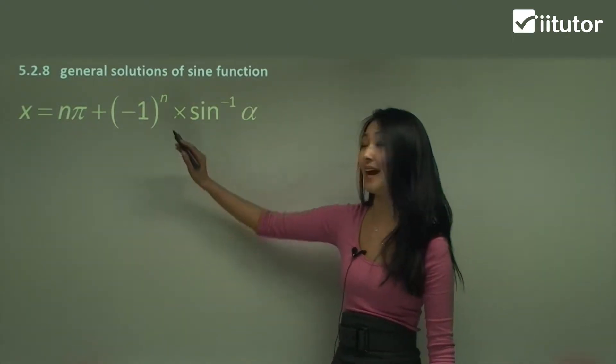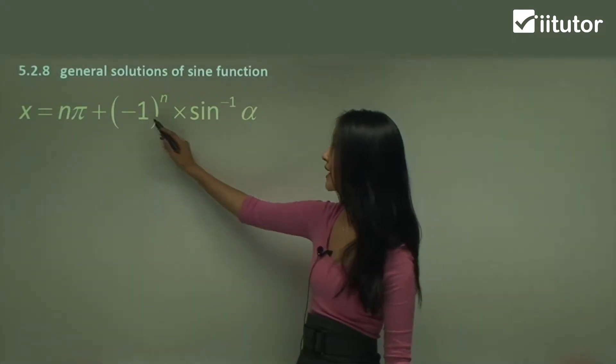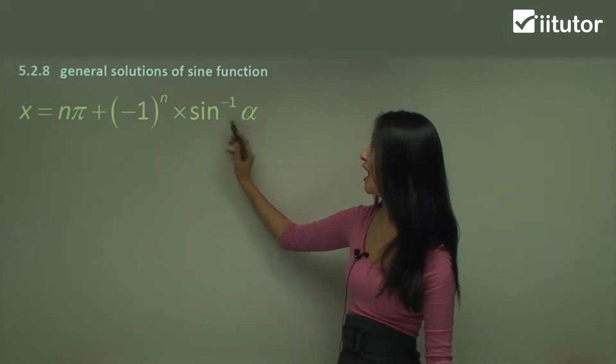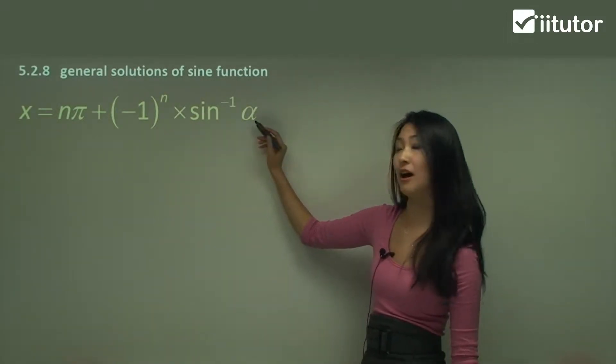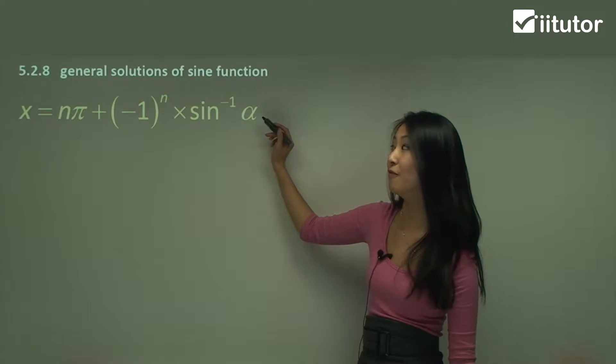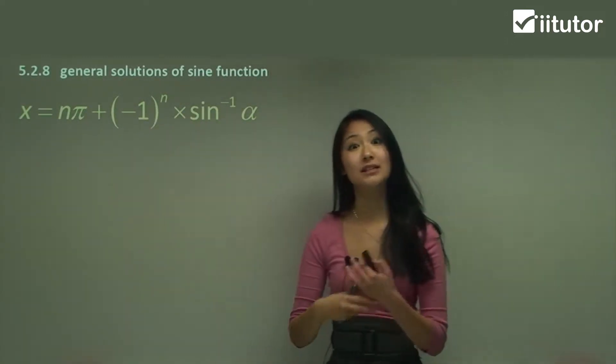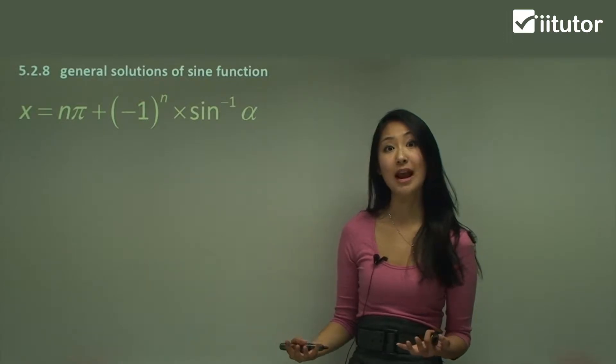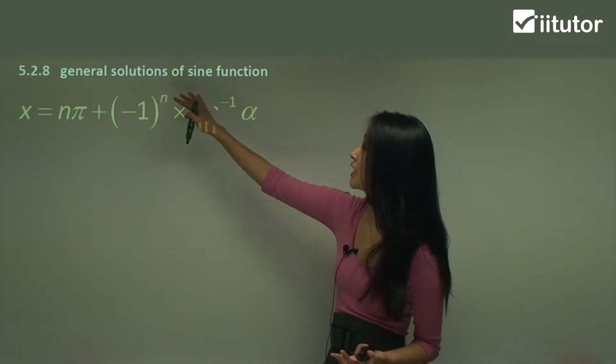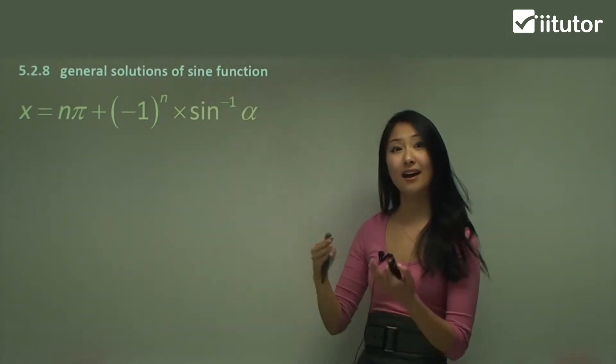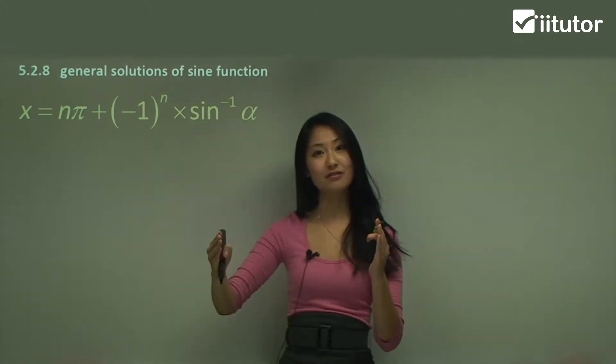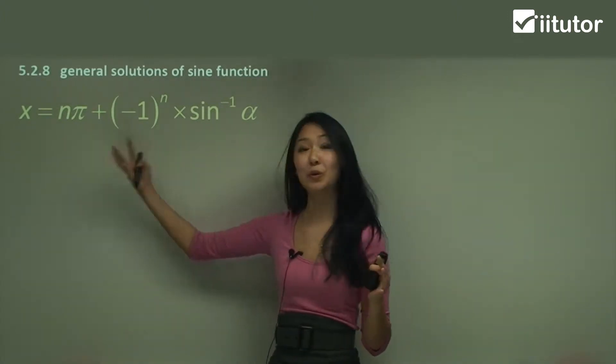We have x equals to n pi plus negative 1 to power of n times inverse sine of alpha, so our angle or value there. Now what n stands for is just any number, so any integer. So what the general solution does is it tells you about all the values that sine could be.